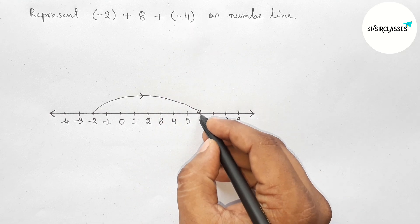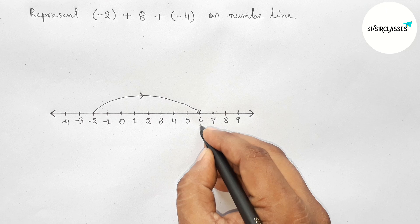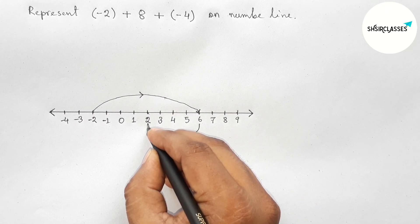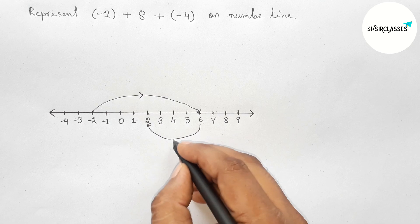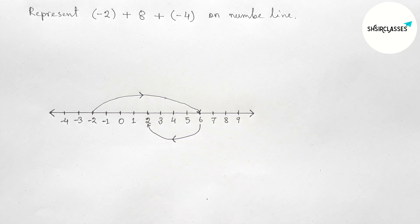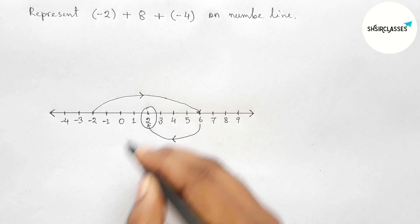So here is 2, and the direction will be from right to left side. Okay, so the answer here is 2. Circle here 2.